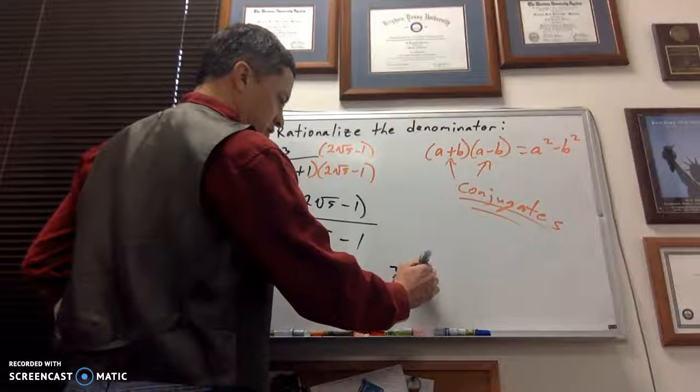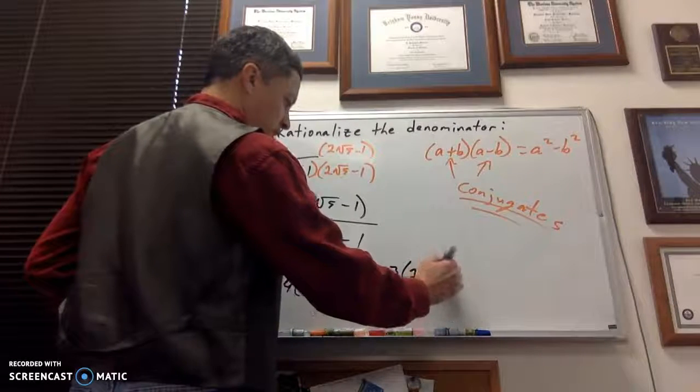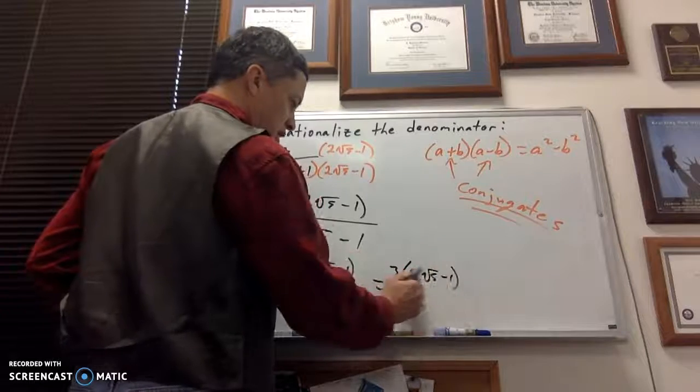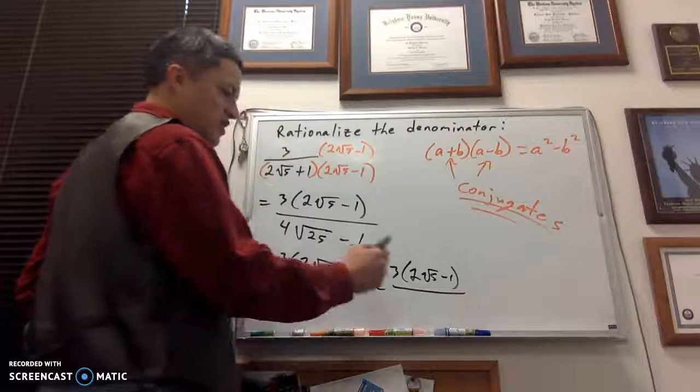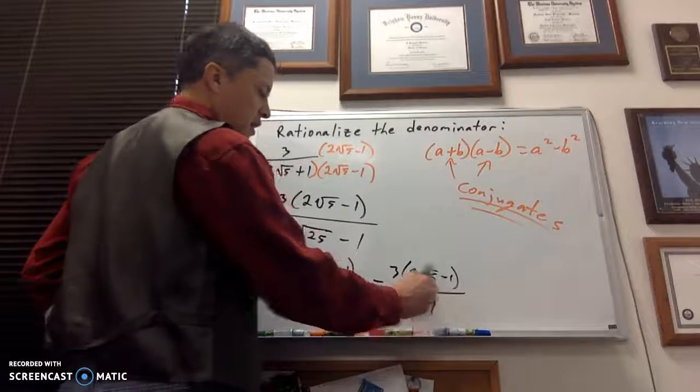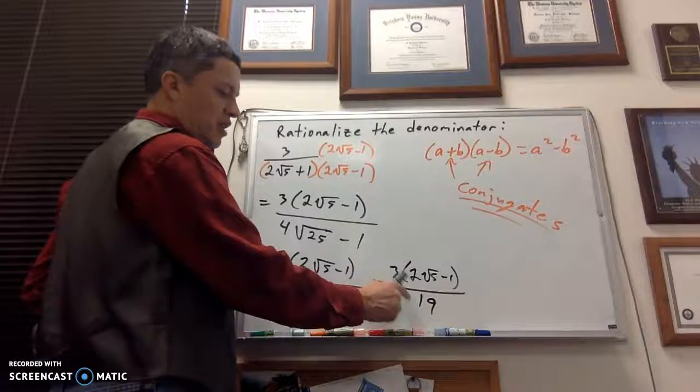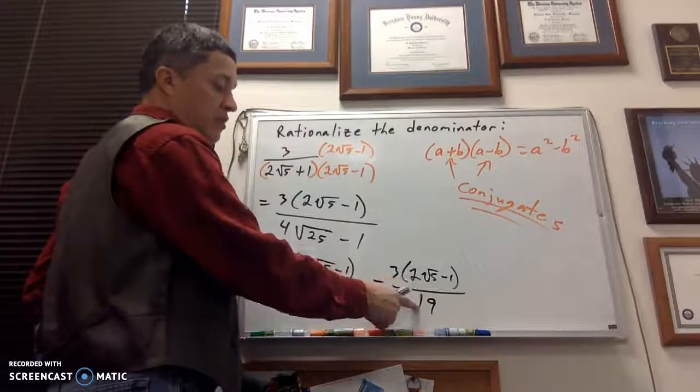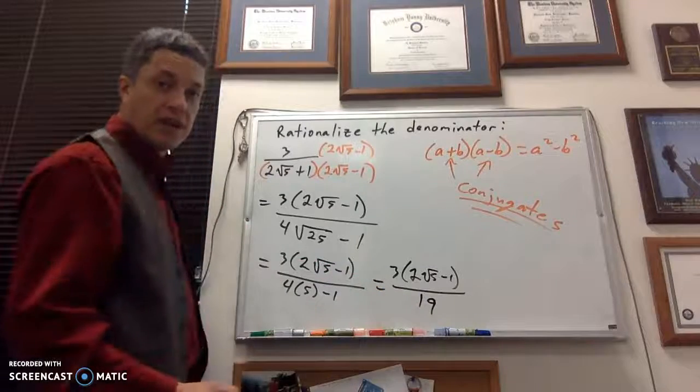So, 3 times the quantity of 2 root 5 minus 1, all over 20 minus 1, that's 19. And so, I'm not going to be able to reduce the 3 with a 19. If that was like, say, an 18, I could have reduced that, right?